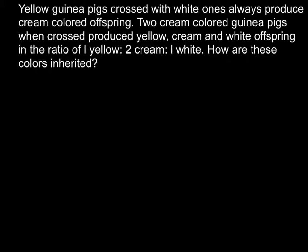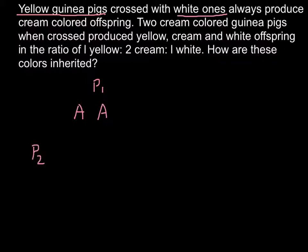For the yellow guinea pigs, we may say that this would be homozygous dominant. So this would be Parent 1, and the genotype would be capital A, capital A (AA). When we cross with white ones, Parent 2 would be homozygous recessive — small a, small a (aa).